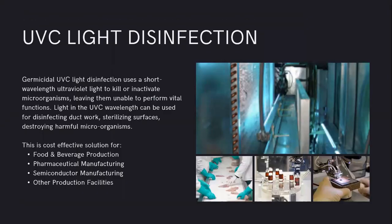UVC light disinfection is a germicidal UVC light that uses shortwave length ultraviolet light to kill and inactivate microorganisms, leaving them unable to perform vital functions. We've been talking about this technology and the science behind it for many weeks now, but we want to talk specifically about how we use the light in disinfecting ductwork, sterilizing surfaces, and destroying harmful microorganisms in manufacturing. This is proven technology, very cost effective for food and beverage production, pharmaceutical manufacturing, semiconductor manufacturing, and production facilities. It's really unlimited — we're seeing it not only in production and manufacturing, but in distribution as well.